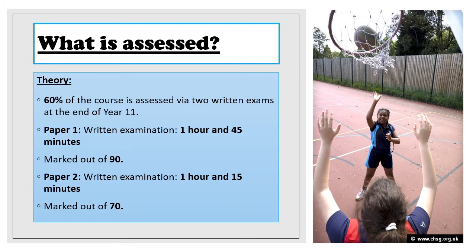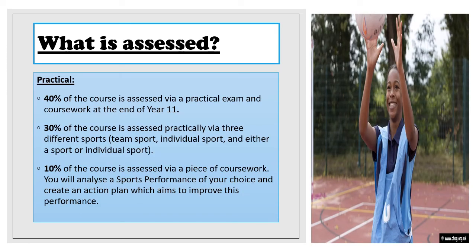Now let's have a look at what is assessed. In theory, you will be assessed in two written exams at the end of Year 11 — Paper 1 and Paper 2 — making up 60% of your overall GCSE grade. In practical, you will be assessed in a practical exam and coursework at the end of Year 11, making up 40% of your overall GCSE grade.